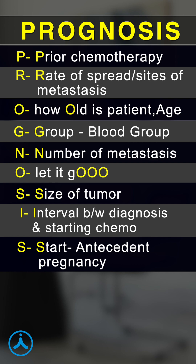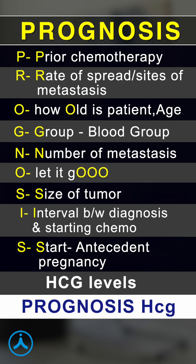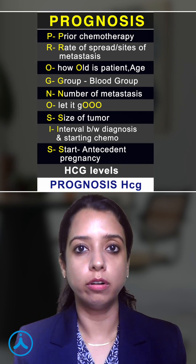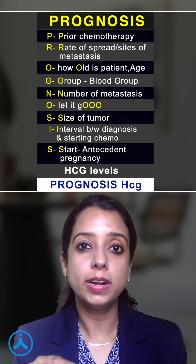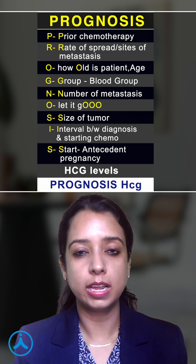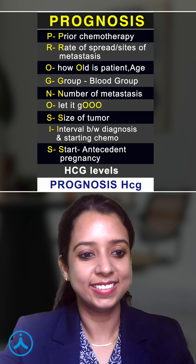One variable is still left, and that is HCG. So your mnemonic for remembering the scoring system is 'PROGNOSIS HCG'. Now, how much should the score be after which you will decide to give the patient multi-dose chemotherapy, not a single dose? Answer in the comment section.